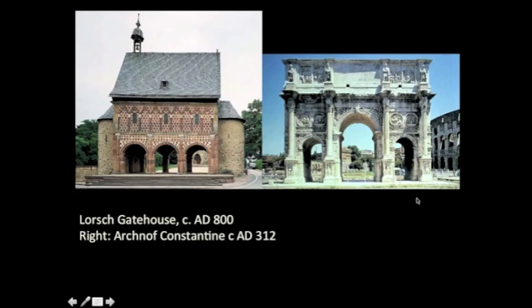For example, one of the Carolingian buildings is a little gatehouse at a monastery in Lorsch, Germany. In contemporary Carolingian texts, it's described as a model of a triumphal arch — a Roman triumphal arch. But you look at this thing and have to say: I don't think so. The Arch of Constantine is a good example of a real triumphal arch. The Lorsch gatehouse comparison has a lot to do with an interest in number symbolism, which becomes more important than physical attributes. The patterned surface substitutes for a fully plastic system of articulation like on the Constantine arch.